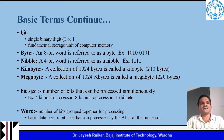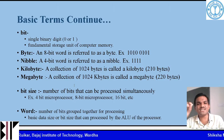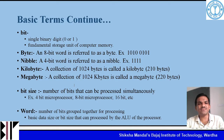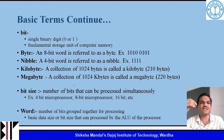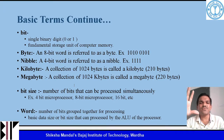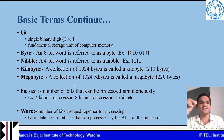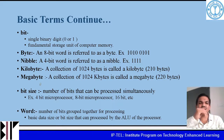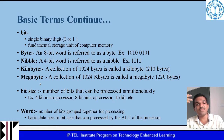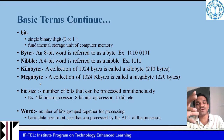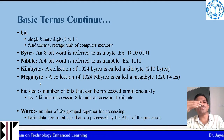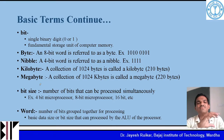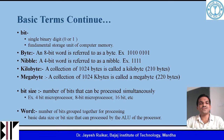Next we will talk about bit size. Bit size is the number of bits that can be processed simultaneously — specifically, the arithmetic circuits of the microprocessor process bits simultaneously. Word size refers to the number of bits grouped together in a microprocessor; it generally refers to the basic data size or bit size that can be processed by the ALU.